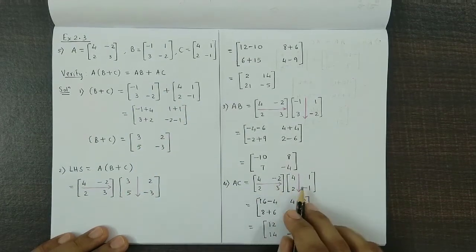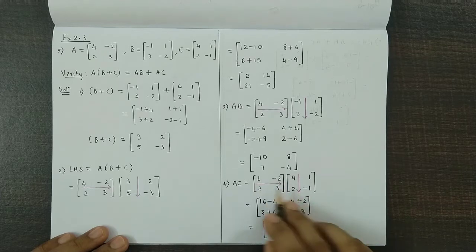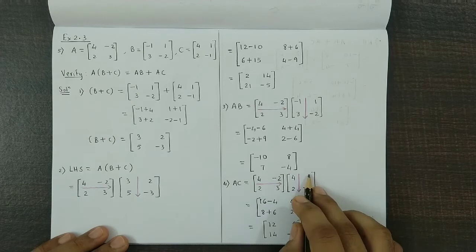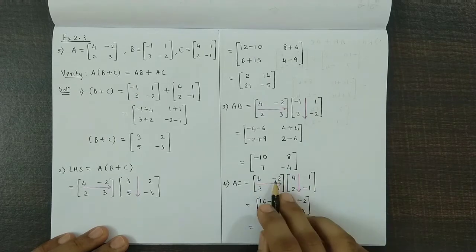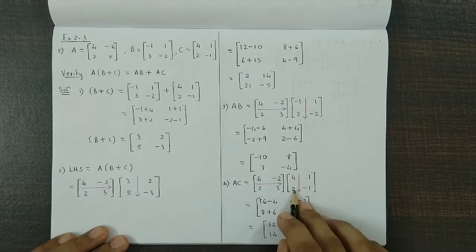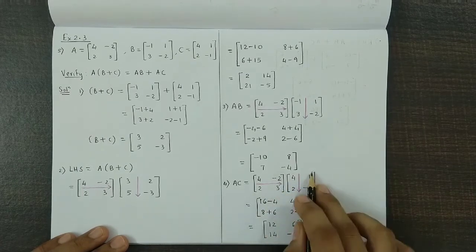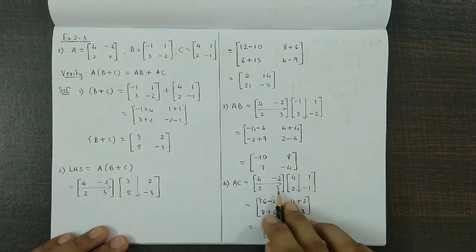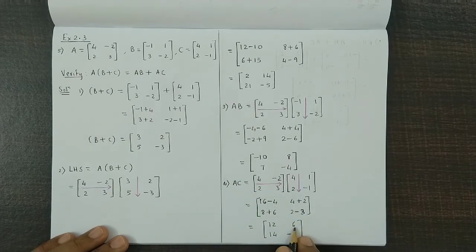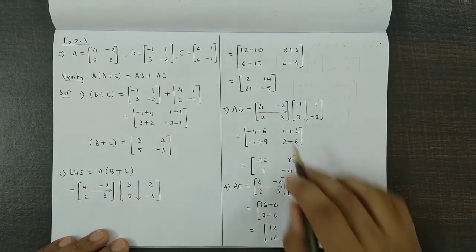Next we obtain the product AC. We multiply the two matrices: R1 into C1 is 16 minus 4, R1 C2 is 4 plus 2, R2 C1 is 8 plus 6, and R2 C2 is 2 minus 3. So we have AC as 12, 6, 14, and minus 1.